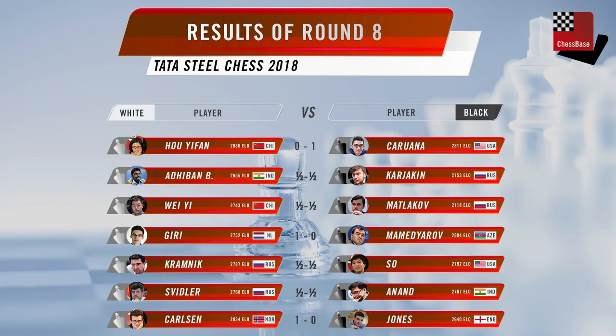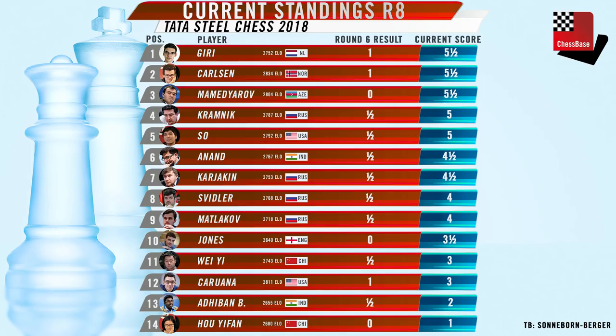Giri, Carlsen and Mamedyarov share the lead with five and a half. Kramnik and So on five. And at the bottom of the tournament, we have Hou Yifan on two. Karjakin, a bit of a comeback with three out of eight, but he's having a terrible tournament.